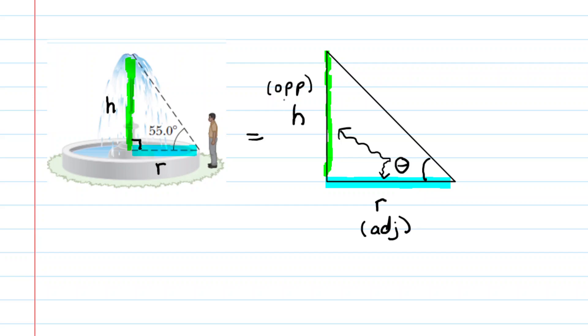Now think about which trigonometric function relates the opposite and adjacent sides of a right triangle, and of course you should come up with the tangent function. So we know that the tangent of that angle would equal the opposite side divided by the adjacent side.